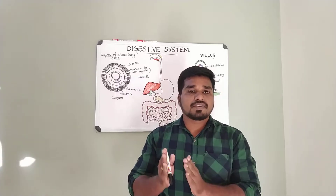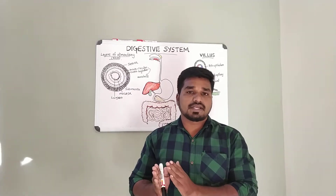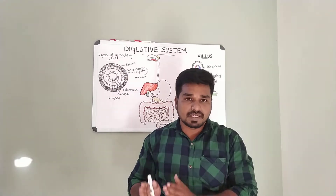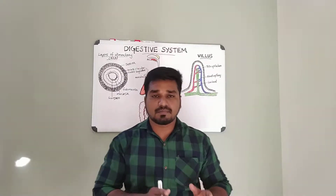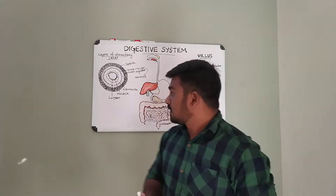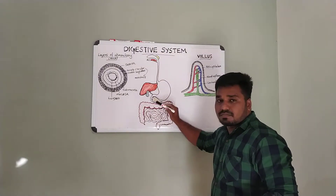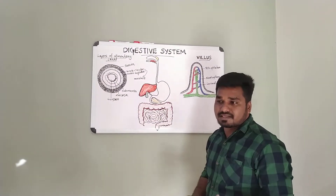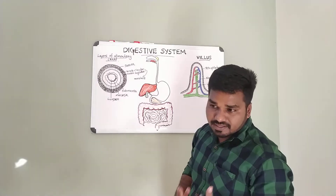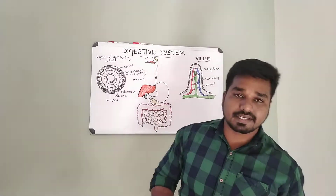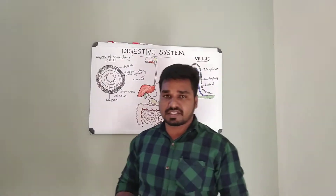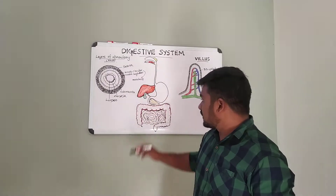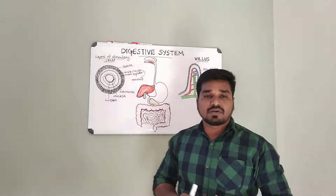The salivary glands are the parotid glands, submandibular glands, and sublingual glands. Also included as accessory organs is the pancreas. The pancreas produces pancreatic juice, which is an exocrine secretion delivered via the pancreatic duct to the duodenum.